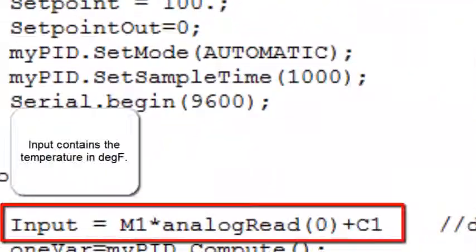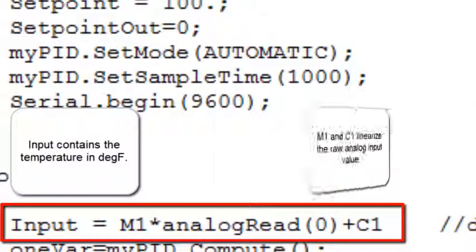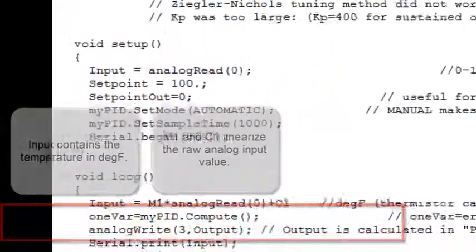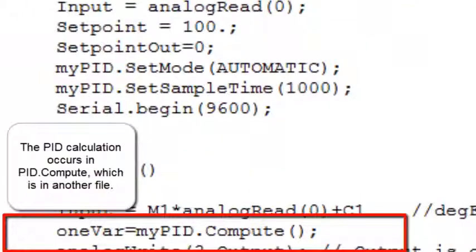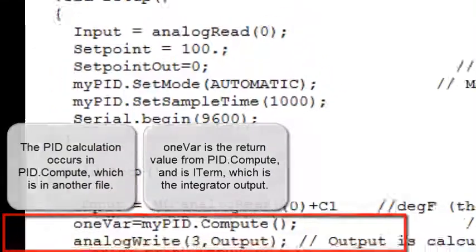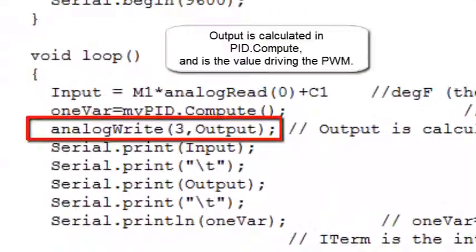Input contains temperature in degrees Fahrenheit. M1 and C1 linearize the raw analog input value. PID calculation occurs in PID.compute, which is in another file. 1var is the return value from PID.compute and is iterm, which is the integrator output. Output is calculated in PID.compute and is the value driving pulse width modulation.